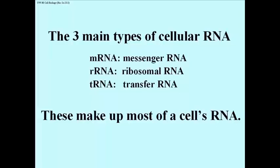These three types make up most of the cell's RNA. There are other kinds of RNA — for example, primers are a kind of RNA as well — but they and other kinds of RNAs are not quantitatively a major component of a cell's RNA.